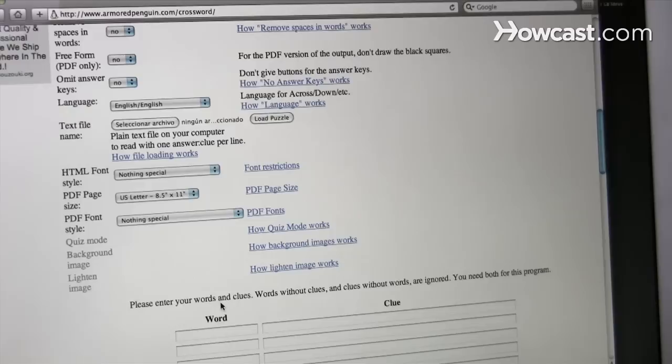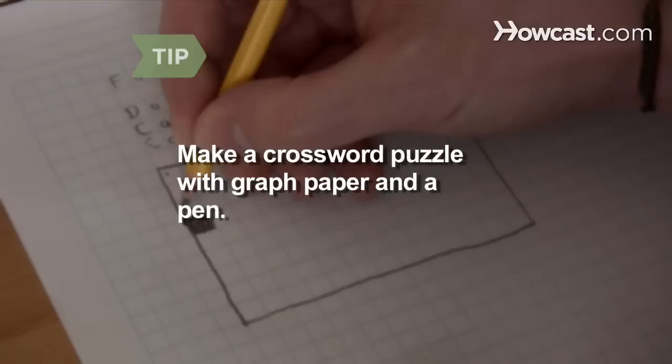Step 4. Using an online crossword puzzle maker, enter the width, height, and number of squares, then enter the words and clues line by line. Click a button and the puzzle is generated.